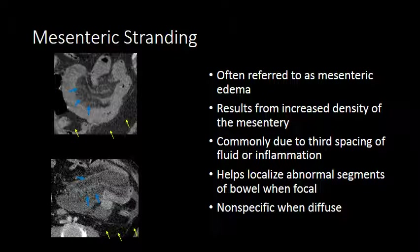On the left-hand side of your screen, you can see examples of mesenteric stranding, where you have increased conspicuity of the vessels within the mesentery and increased density of the mesentery due to third spacing of fluid within a segment of mesentery attaching to an abnormal loop of small bowel.